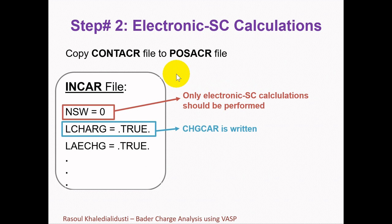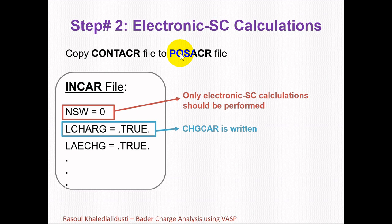Now we have an optimized structure. The second step is performing an electronic self-consistent calculation. We need to use our optimized structure from the first step by copying the CONTCAR file to the POSCAR file. Then we need to perform the electronic self-consistent calculation with the same K-Points and POTCAR file of the first step, and make some changes in our INCAR file with the following keywords.